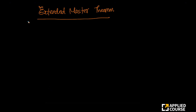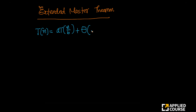Since we have seen the Master's Theorem, there is a slightly modified version of it which is also very, very useful. Imagine if your recurrence relation is of this form: T(n) equals A·T(n/b) plus theta of n^k · log^p(n).